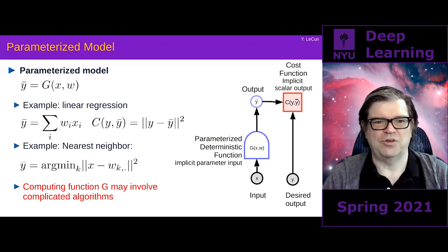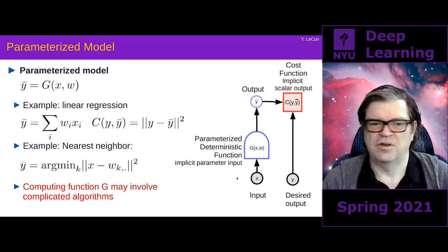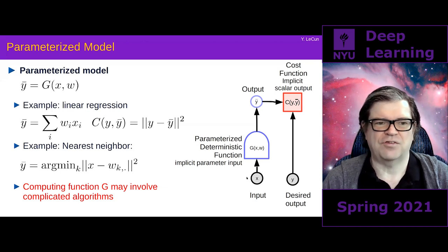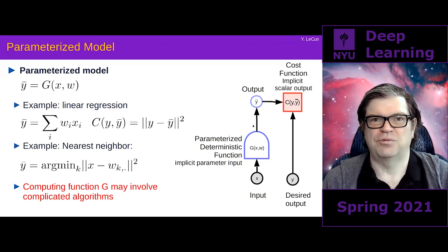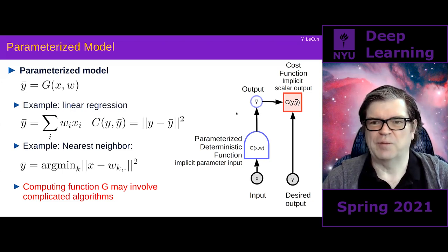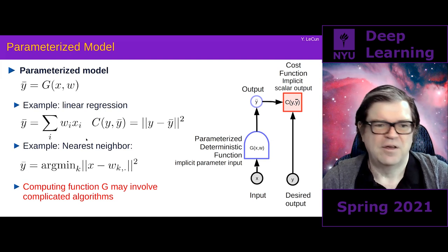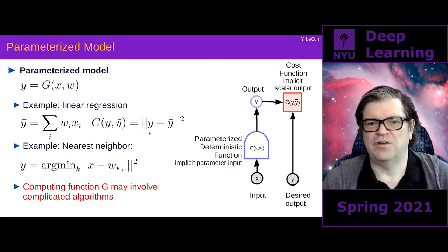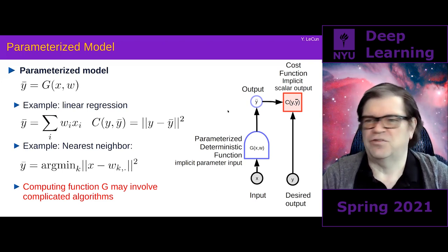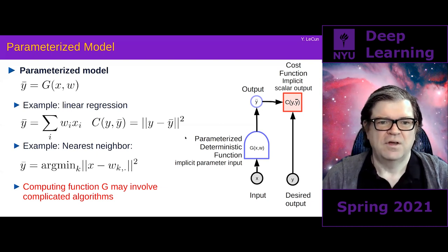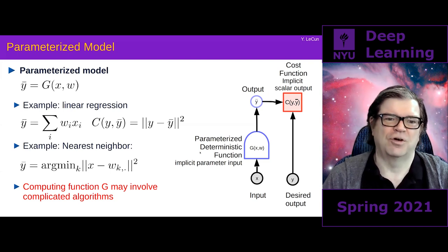A simple example of this is linear regression. In linear regression, x is a vector composed of components, w is also a vector, and the output is a scalar that is simply the dot product of x with w. Y-bar is a scalar, and what you compute is the squared difference between y and y-bar. If w is a matrix, then y is a vector, and you compute the squared norm of the difference between y and y-bar — that's basic linear regression.